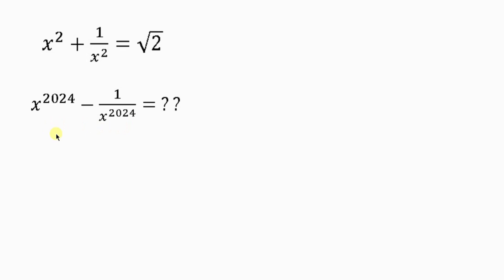Well our first step towards solving this question is to get rid of the square root of 2. And how do we do that? It is simply by taking the square of both sides. So I'm going to be squaring x squared plus 1 over x squared equal to I'm also going to be squaring the square root of 2.